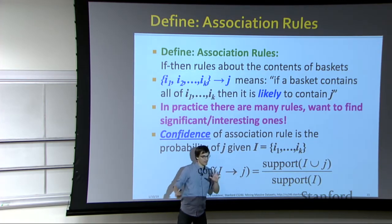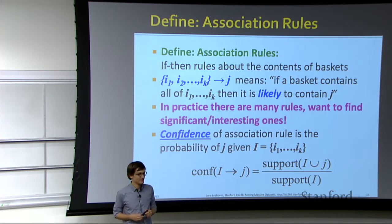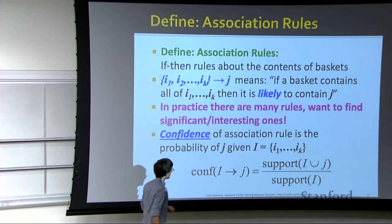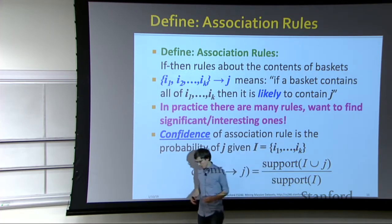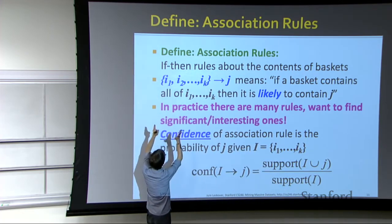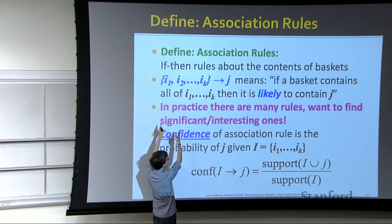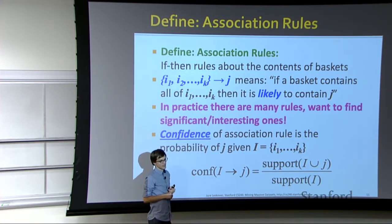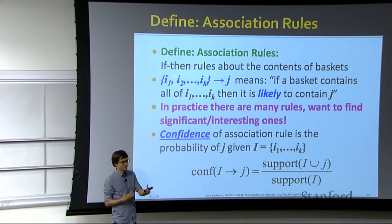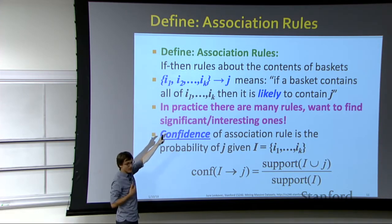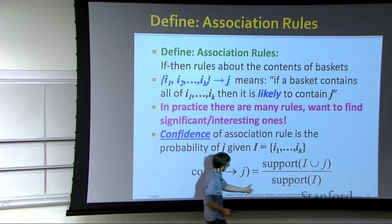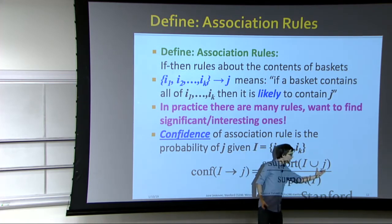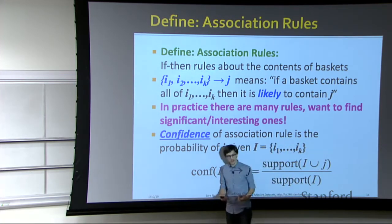Why is confidence not divided by the support of J? It makes no sense to divide by the support of J because the question is: out of how often the left-hand side occurs, how often does the right-hand side occur? It's from left to right. You are given I1 through IK, and then out of those cases, how often does J also appear? That's the right way to do it.